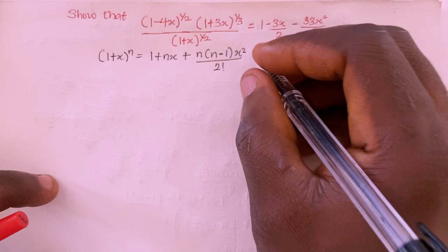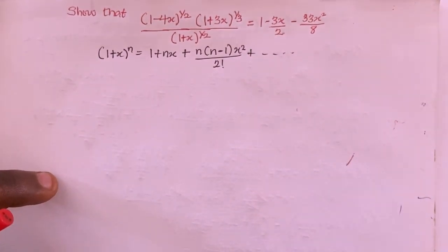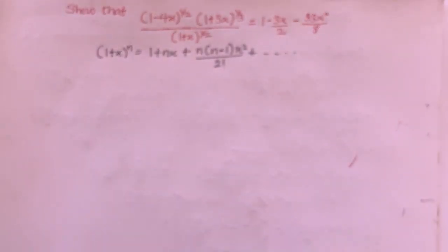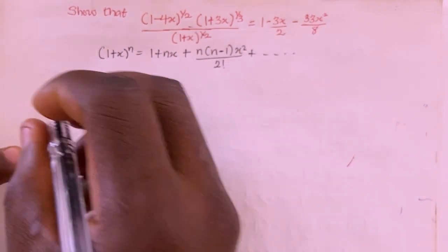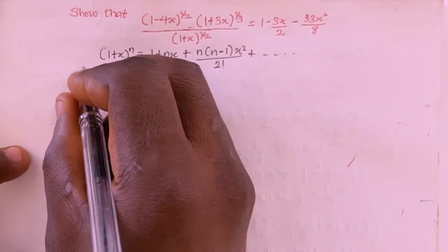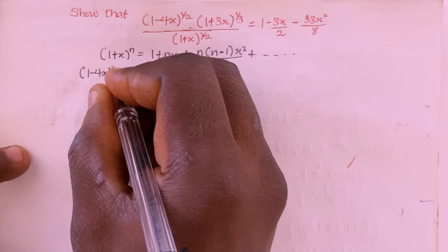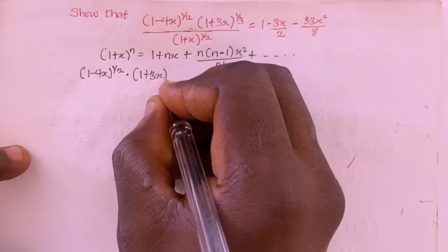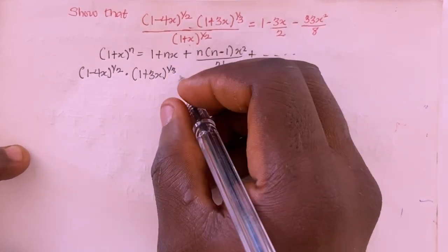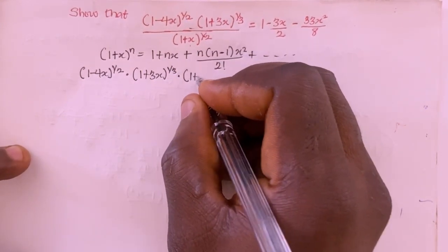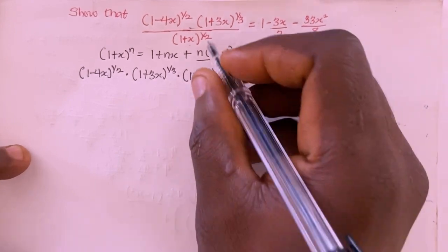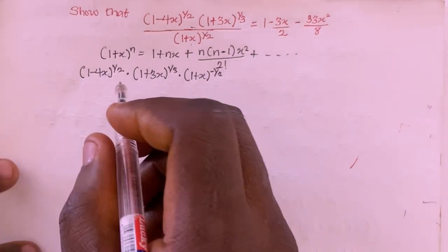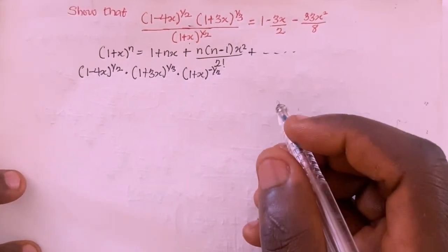I'm going to rewrite the original expression by breaking it into three separate parts: (1 - 4x)^(1/2) multiplied by (1 + 3x)^(1/3) multiplied by (1 + x)^(-1/2). If I bring out the terms, that gives me the exponent minus 1/2 on the last factor, and I'm multiplying these three expressions together.